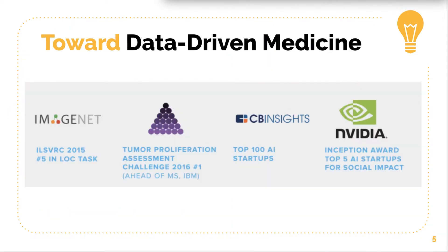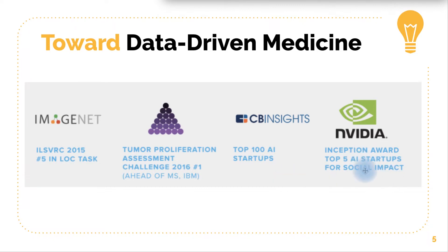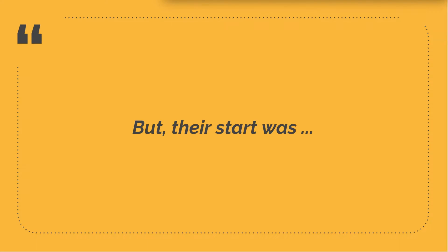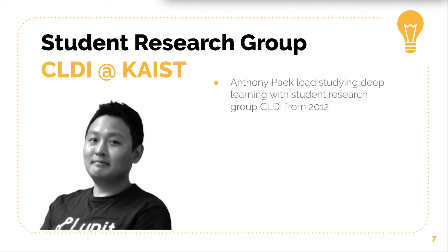They've also achieved great results in various competitions. In 2015, Lunit ranked fifth in the LOC task at ILSVRC 2015. They also got top positions at TUPAC 2016 and CamelyOn17, which are pathology analysis contests. CB Insights named Lunit as one of the top 100 AI startups, and NVIDIA appointed this company as a top five AI startup for social impact. Lunit started as a student research group called KLD at KAIST, and they later changed their name to Lunit.